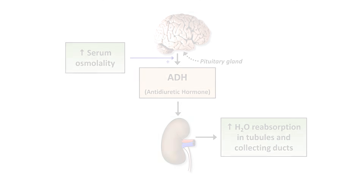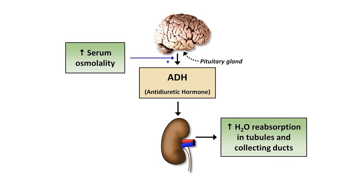To remind you of some renal and endocrine physiology, the tubular reabsorption of water is primarily dependent upon the hormone ADH, which stands for anti-diuretic hormone. As your serum sodium and thus serum osmolality increase, your hypothalamic-pituitary axis releases more ADH into the circulation, which then travels to the kidneys and tells them to hold on to more water, reducing the volume of urine produced. So if there is a problem with tubular reabsorption of water, it means there must be a problem with ADH.